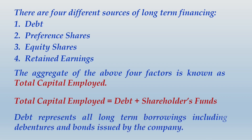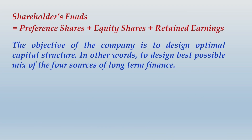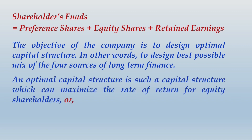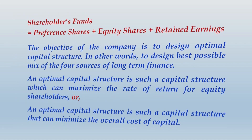Debt represents all long-term borrowings including debentures and bonds issued by the company. Shareholders funds include three components: preference shares plus equity shares plus retained earnings. The objective of the company is to design an optimal capital structure — the best possible mix of the four sources of long-term finance — which either maximizes return for equity shareholders or minimizes the overall cost of capital.